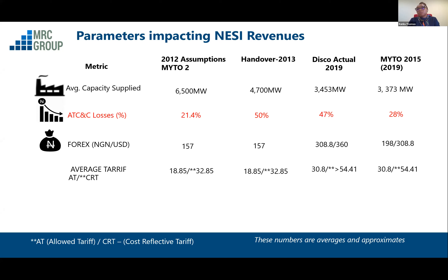Forex is a key component. When forex at the CBN or in the market is at a given rate, the expectation is that your tariff will be adjusted to reflect that. At handover, we had a tariff of 18 or 19 Naira, but the cost-reflective tariff at the time should have been 33 Naira. We were not paying 33 Naira — we were paying 19 Naira. In 2019, the tariff we were paying was 31 Naira, but what you should have been paying is 54 Naira.